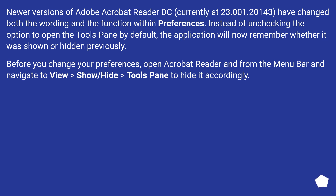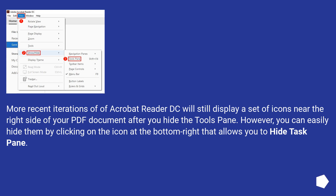Before you change your preferences, open Acrobat Reader and from the menu bar navigate to View > Show/Hide > Tools Pane to hide it accordingly. More recent iterations of Adobe Acrobat Reader DC will still display a set of icons near the right side of your PDF document after you hide the tools pane. However, you can easily hide them by clicking on the icon at the bottom right that allows you to hide the task pane.